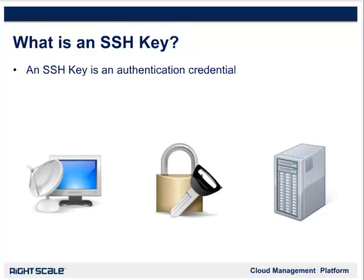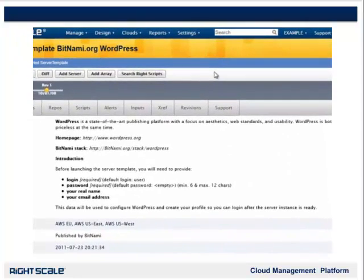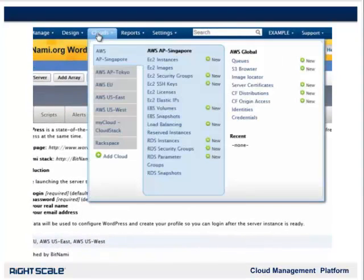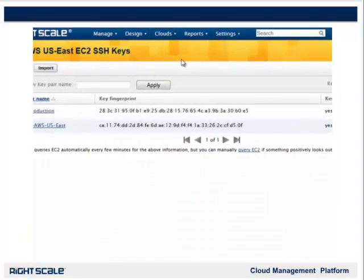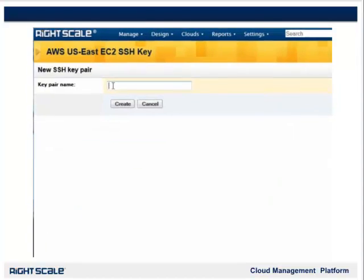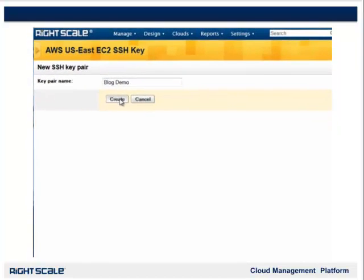Or making changes that are not performed in the dashboard. I will be creating an SSH key and then a Security Group. These objects are individually created for a specific cloud, and since we are using AWS in this demo, they are also created in a specific EC2 region. Think of each EC2 region as its own cloud. EC2 equals Amazon Elastic Cloud Compute — the public cloud offering from Amazon Web Services. Now we'll create an SSH key by going to Clouds > AWS US East > EC2 SSH Keys and clicking New. I will call our demo SSH key Blog Demo, and press Create.